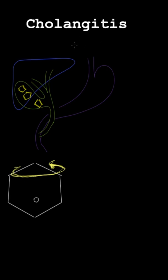Cholangitis means infection in the bile. In this cartoon you can see the liver, the gallbladder with gallstones, and the bile tube. The stomach is over here. Sometimes the gallstones slip out of the gallbladder and come down into the bile tube itself, causing an obstruction to bile flow.